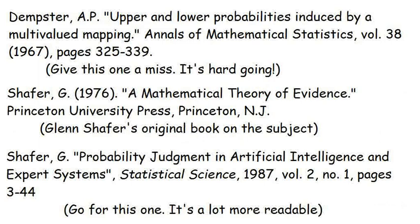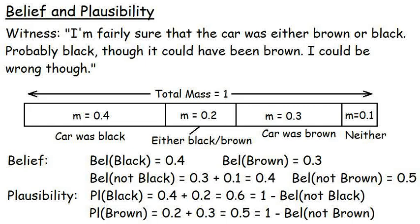I'll start with Dempster-Schafer theory, which you might see listed in the literature as DST. This was first formulated by Arthur Dempster in 1967, and later developed and made a lot more accessible by Glenn Schafer in 1976. Dempster's work contains a great deal of maths, mainly involving set theory. If you ever look up Dempster-Schafer in the academic papers, I hope you like set theory, because you'll be seeing an awful lot of it. Schafer's work concentrates more on combining evidence from different sources, and for our purposes, I would recommend looking at his work rather than Dempster's.